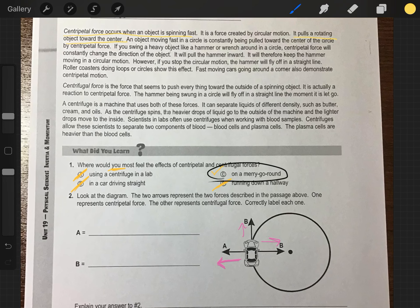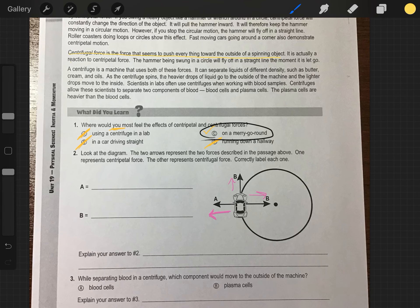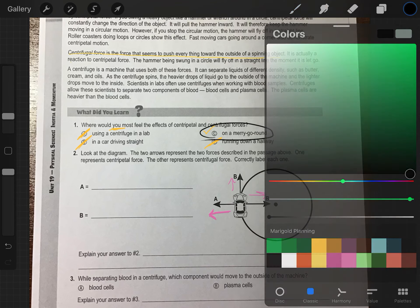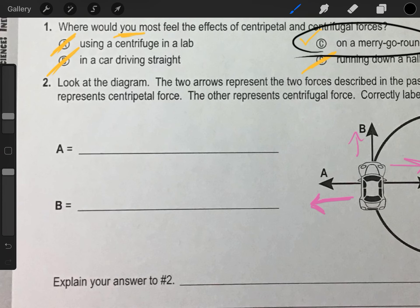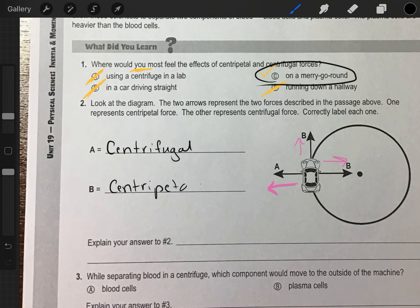Now, centrifugal force is the force that seems to push everything toward the outside of a spinning object. So based on those definitions, we can already know that A is going to be centrifugal and B is, make sure you're spelling them correctly, centripetal. Why? Because B, centripetal force, is pulling the object in towards the center, whereas A, it's being pulled outwards.